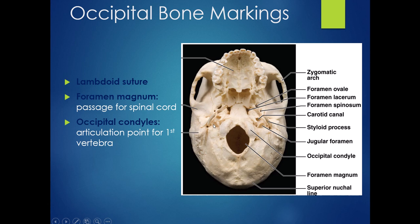If we look underneath the skull at the underside of the occipital bone, we've got the lambdoid suture again connecting it to the parietal bone, but underneath is where we find most of our markings. One of the big ones is the foramen magnum — this is how your spinal cord gets out of your brain. And on either side of the foramen magnum are the occipital condyles, where your skull connects to the first vertebra.